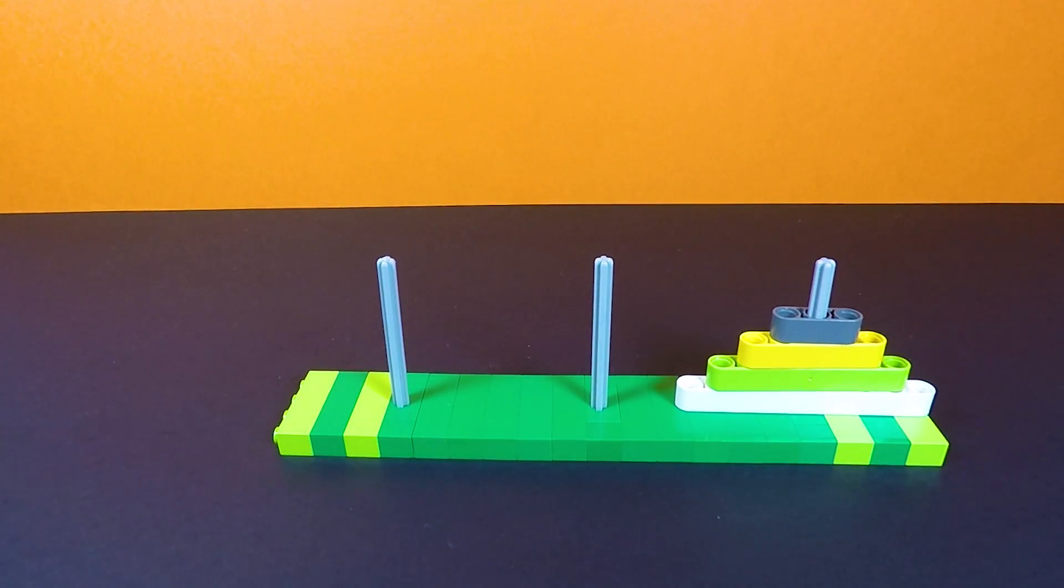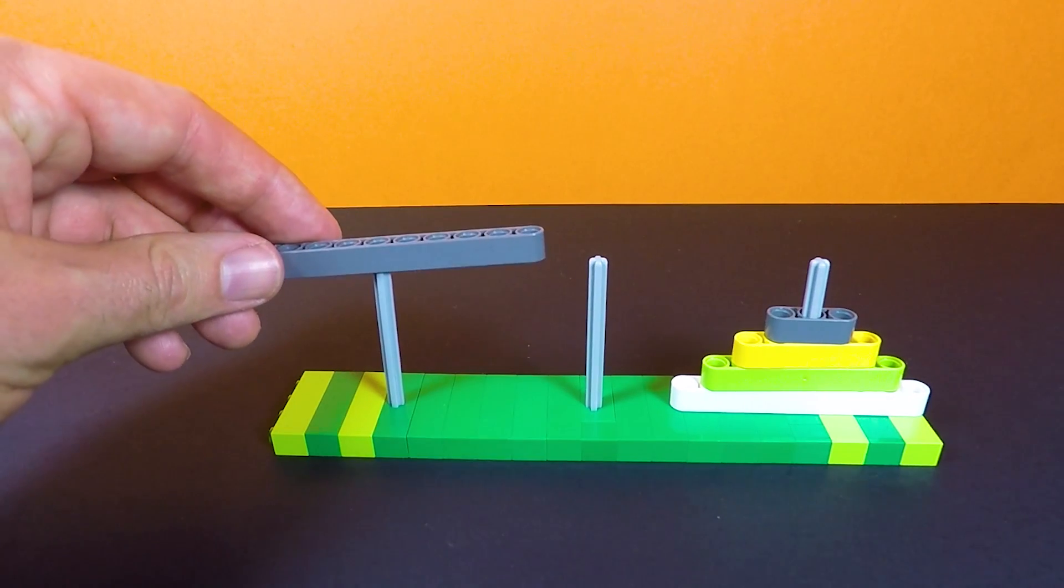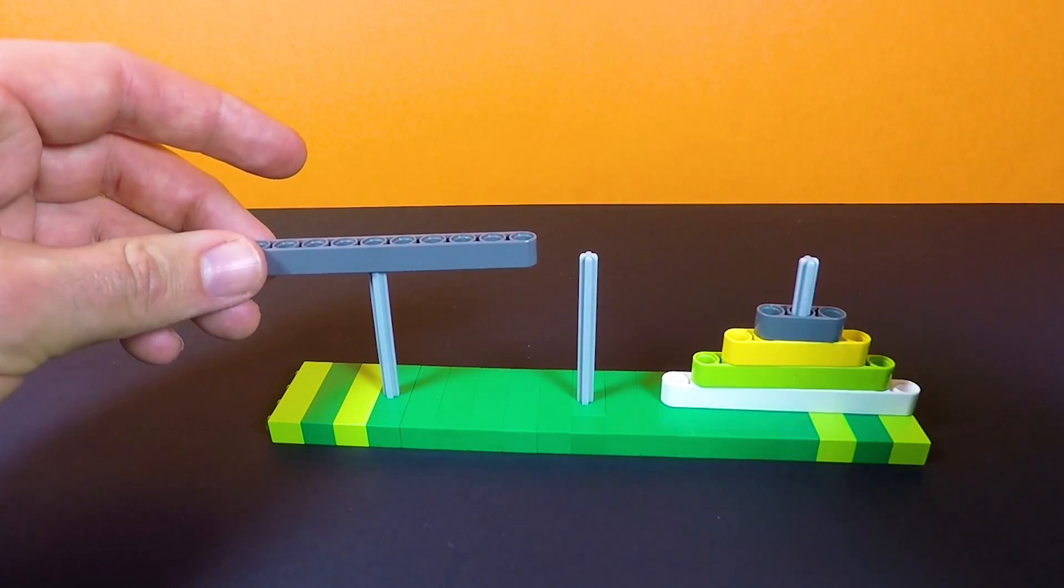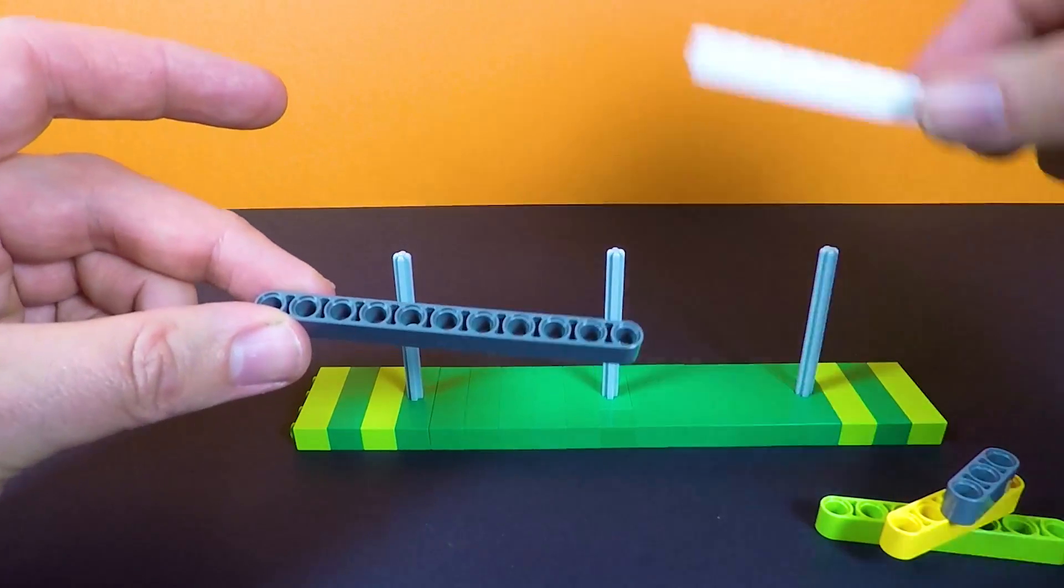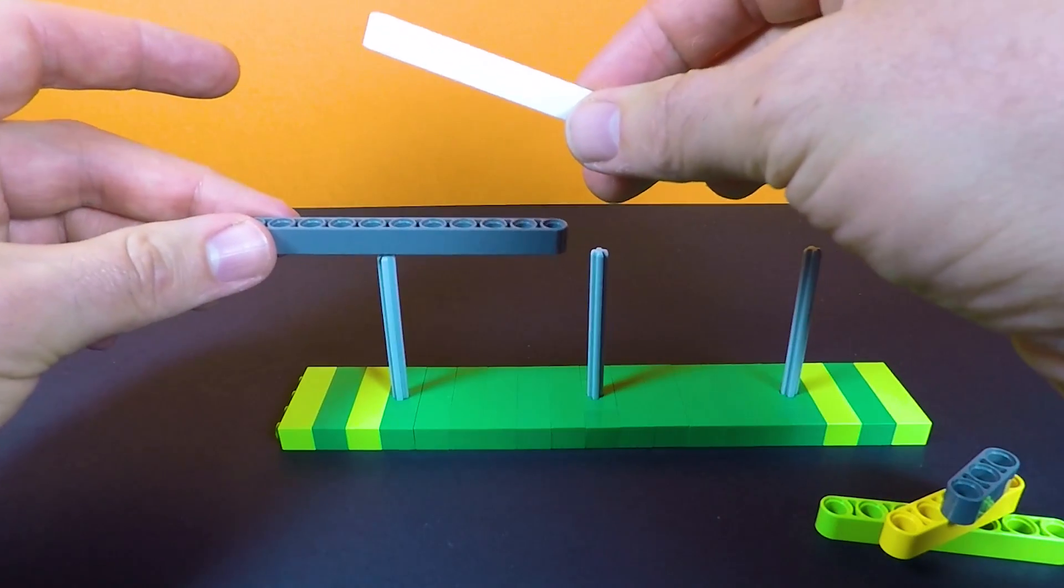That might have not been the quickest way to solve the puzzle, but that is one way. Now if you wanted to make this puzzle a little bit more difficult, you could add another tower. So we've got another one here, which is just one bigger than our base one. So we'll just pop that in there.